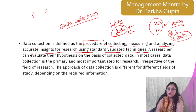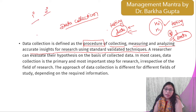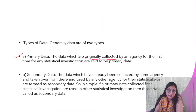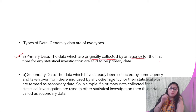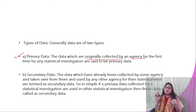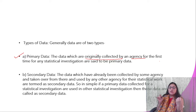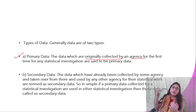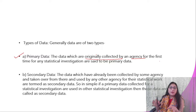Data is basically of two types: one is primary data and the second is secondary data. Primary data is originally collected by the agency or by the researcher — we call it first-hand data. A researcher collects it directly from the respondent. That is your primary data.